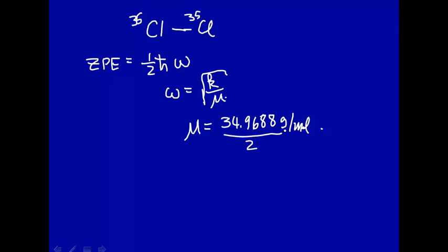This is for a single molecule. We want the zero-point energy for a single molecule, which means we don't want it in per mole, we want it per molecule. So we're going to have to take the reduced mass and multiply it by 10⁻³ kilograms per gram, and we're going to have to divide by Avogadro's number: 1 mole over 6.02 × 10²³ molecules.